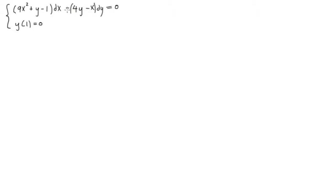So first of all, if we want to test this to see if it's exact, this has to be a plus sign. So your teachers might throw this at you and try to confuse you, but first you have to make sure it's plus. So we can rewrite this as 9x squared plus y minus 1 dx, and then we'll change this to a plus sign, then multiply everything inside by minus 1. So we get plus x minus 4y dy is equal to 0.